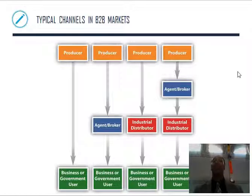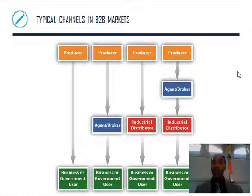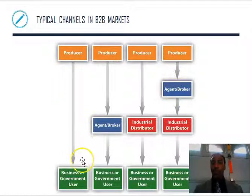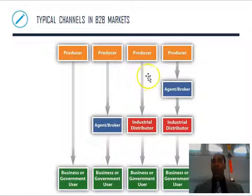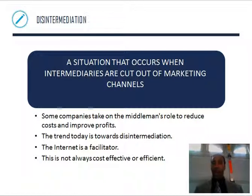These are typical channels in business-to-business markets. Producer goes straight to business or government user. Producer to agent or broker to business or government user. Producer to distributor, then to business or government user. Take some time to review that as well.